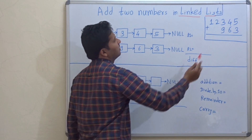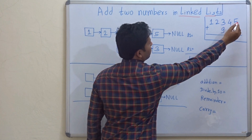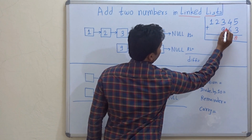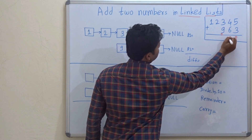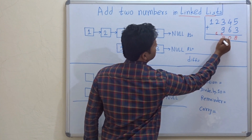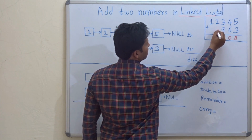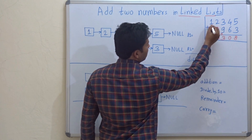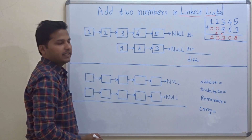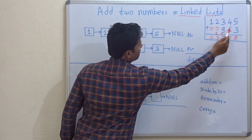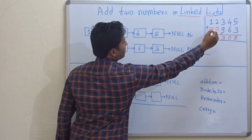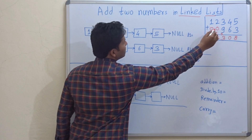Let's add them in our traditional way. So 5 plus 3 is 8. Then 4 plus 6 is 10, so carry 1 and we write 0 here. Then 9 plus 3 is 12, plus 1 carry is 13, so carry 1. 2 plus 1 is 3. Here nothing means it is 0, and here nothing means it is 0. So 1 plus 0 is 1. Which means I have converted 963 into 00963, because those blanks were filled with 0s.